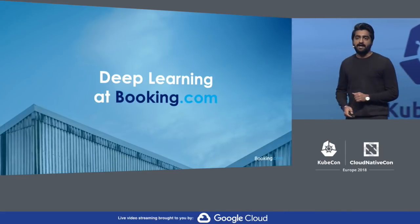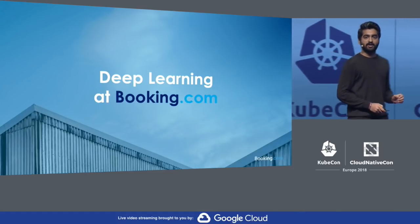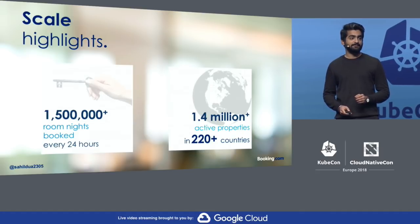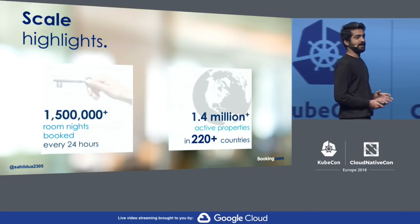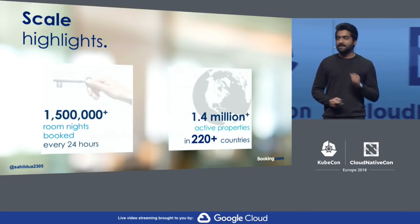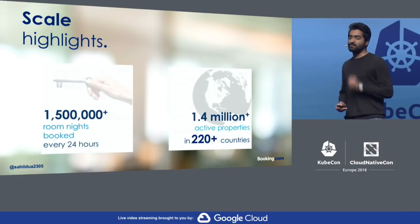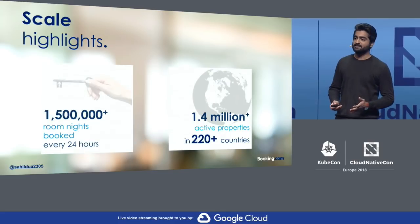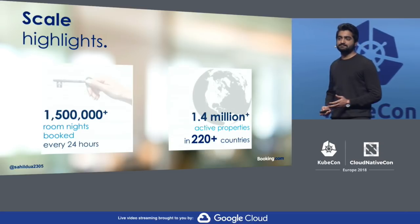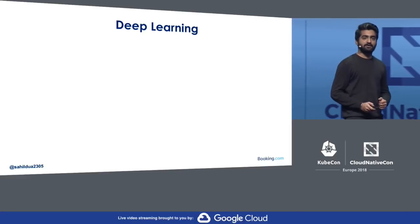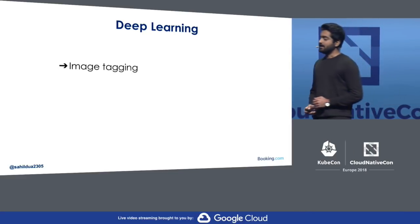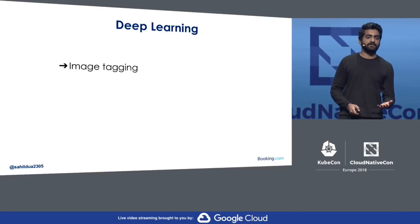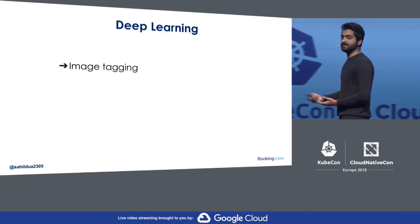Let's start with the deep learning applications. It's really important to understand what scale I'm talking about here. At Booking.com, we have more than 1.5 million room nights booked every 24 hours, and these bookings come from more than 1.4 million properties across 220 countries. The point I'm making is that at this huge scale, we have access to a large amount of data about our users, and we can use that to improve their experience. The first application of deep learning we saw at Booking was image tagging.